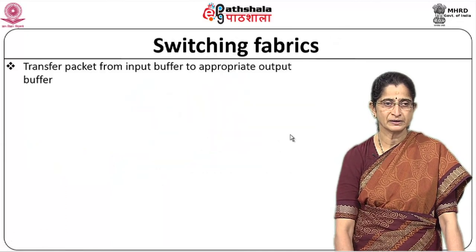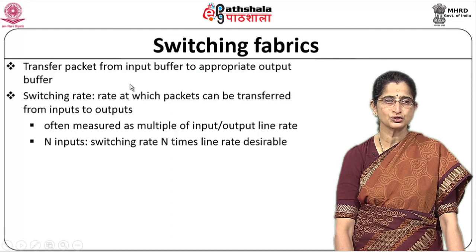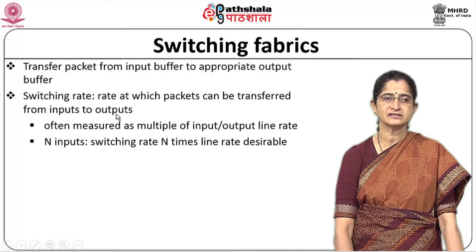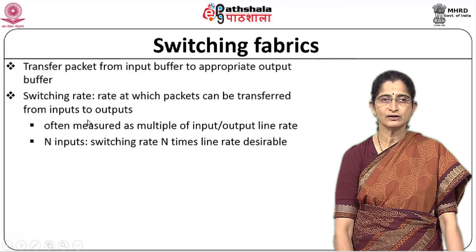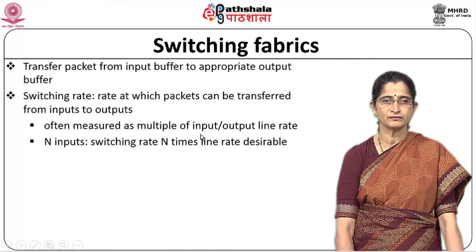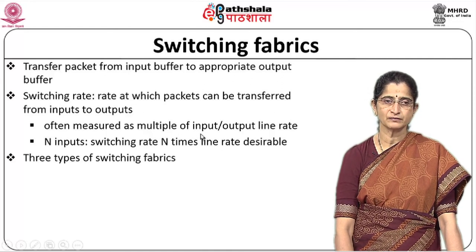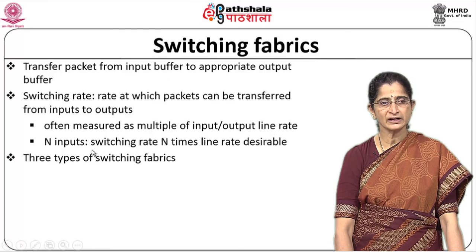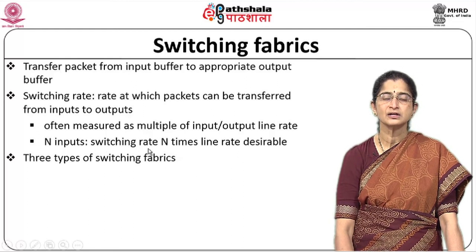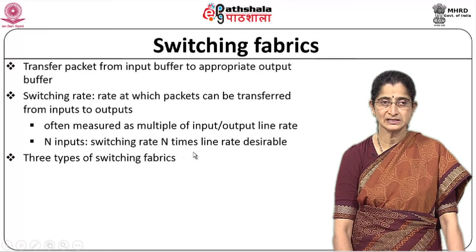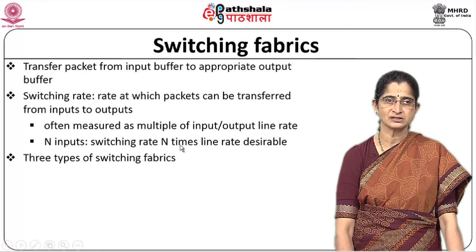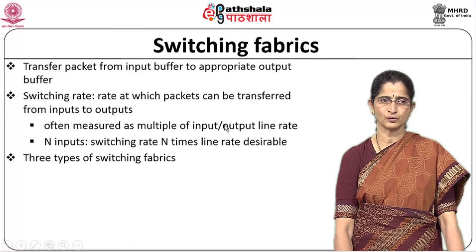Switching fabrics are used to transfer packets from the input buffer to the appropriate output buffer. The switching rate — the rate at which packets can be transferred from input to output — is determined by the type of switching fabric. It is often measured as a multiple of the input/output line rate. If there are N inputs, the switching rate should ideally be N times the line rate, so all inputs can be switched simultaneously without any blocking. Commonly used switching fabrics are of three types: memory-based, bus-based, and crossbar.